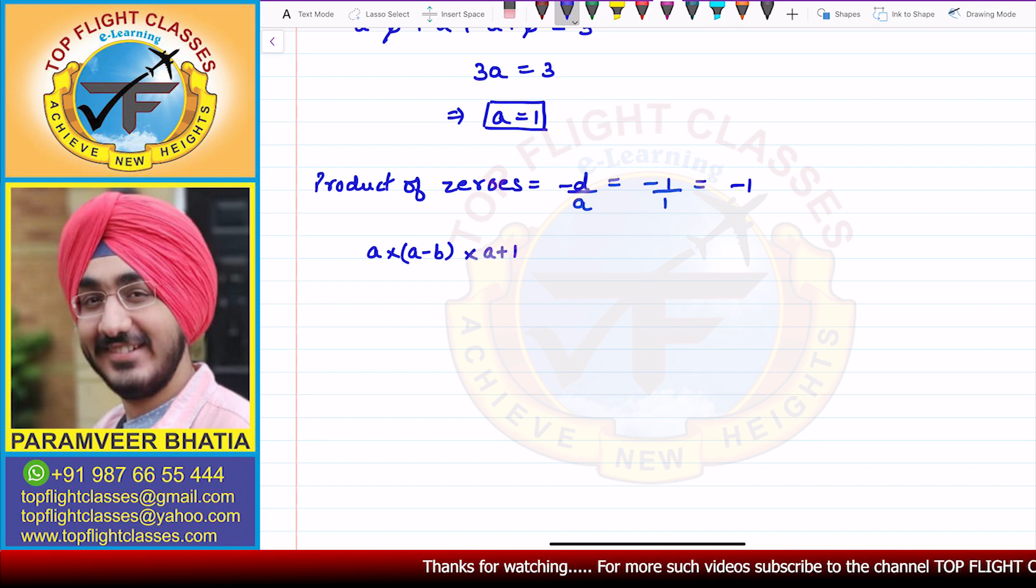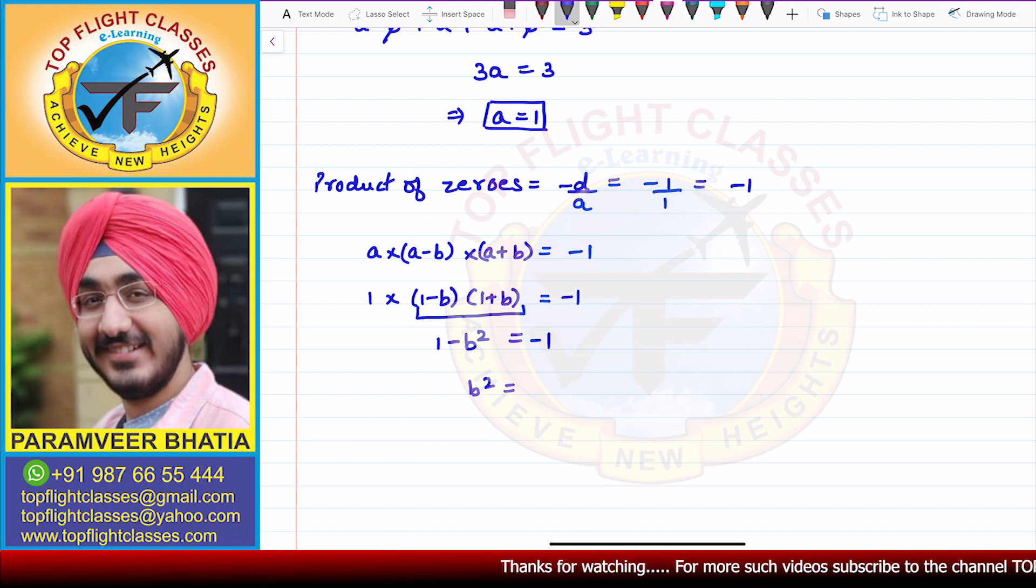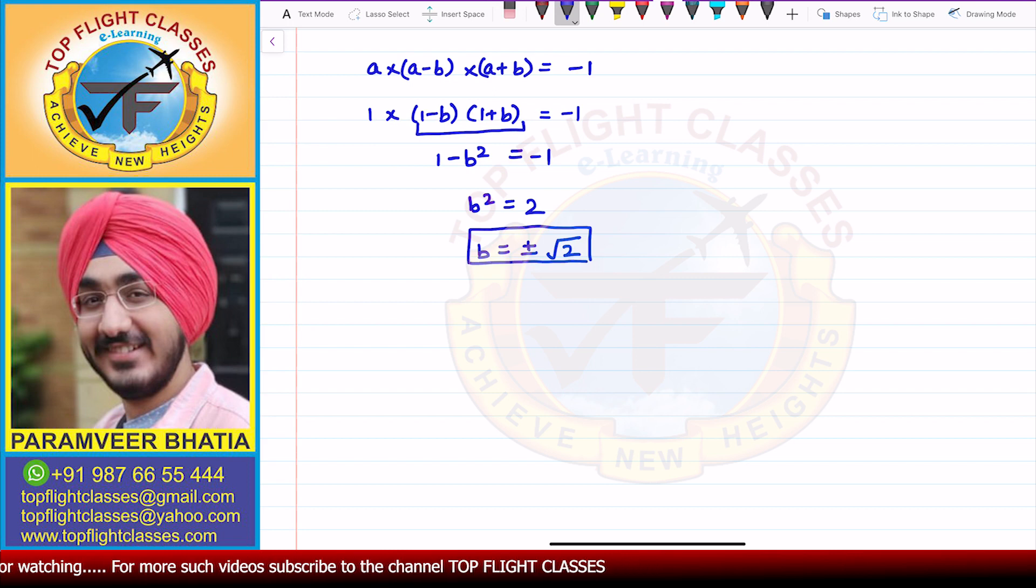Now I put a = 1, so you get 1 × (1-b) × (1+b) = -1. You can see this is (a-b) and (a+b), so I will get a² - b², that is 1 - b² = -1. From here, b² = 2, and from there b = ±√2.